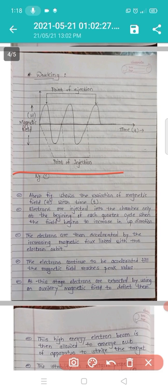The electrons are injected into the chamber only at the beginning of each quarter cycle. This is the sine wave and this is the point when the electrons are injected into the chamber. The electrons are then accelerated by the increasing magnetic flux linked with the electron orbit.